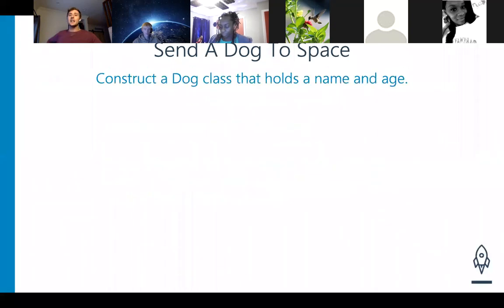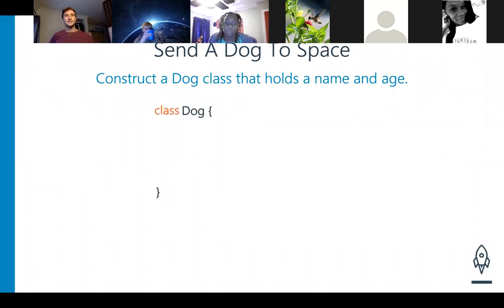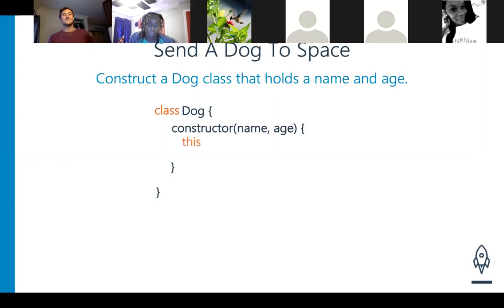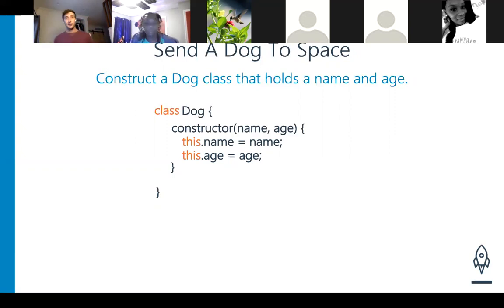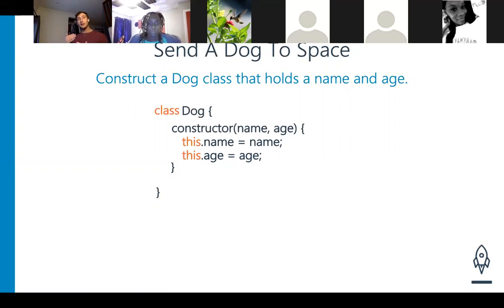Now let's construct a Dog class that holds a name and an age. We start creating: class Dog — class names are always capitalized, no ifs, ands, or buts. The constructor takes in those two parameters, name and age, and then we set them to class-level properties by saying this.name equals name and this.age equals age. The constructor is always at the top.